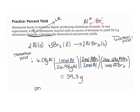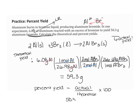Percent yield equals actual yield over theoretical yield times 100. Taking 50.3 grams divided by 59.3 grams, multiplied by 100, we get 84.8%. That is our percent yield.